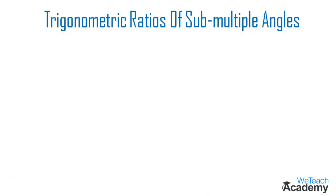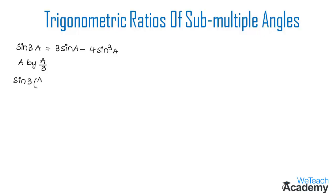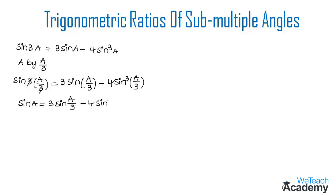To derive the formula, we already know that sine 3a is equal to 3 sine a minus 4 sine cube a. This is the formula for the multiple angle. Now to derive the formula for the submultiple angle, we replace a by a by 3. By doing so, we get sine 3 into a by 3 equal to 3 sine a by 3 minus 4 sine cube a by 3. The 3s cancel, giving us: sine a is equal to 3 sine a by 3 minus 4 sine cube a by 3.